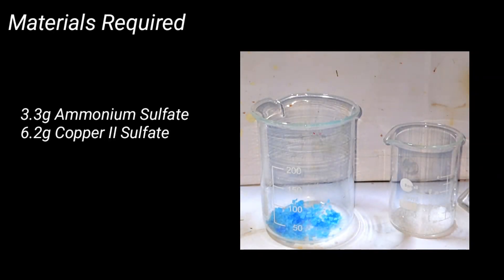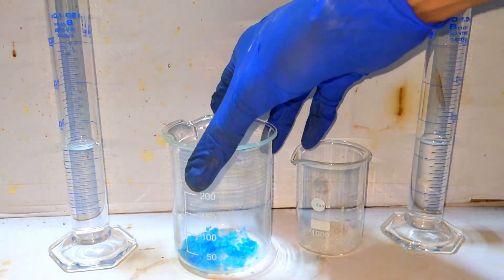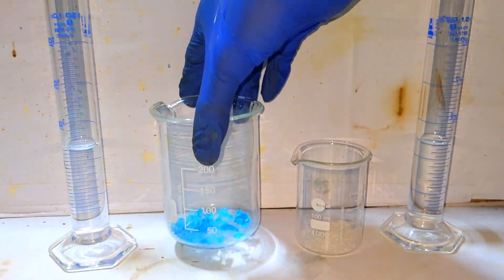Materials required for this preparation include 3.3 grams of ammonium sulfate and 6.2 grams of copper 2 sulfate pentahydrate. Here we have the ammonium sulfate which is colorless and copper 2 sulfate pentahydrate which is blue in color.